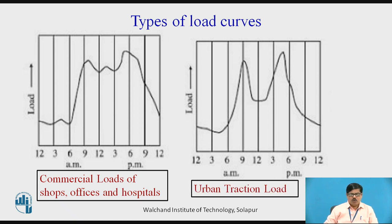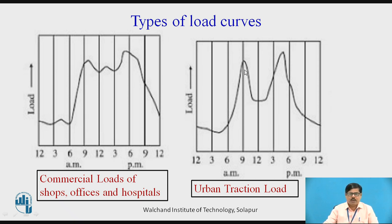The next is urban traction load. Under traction load, it includes the load for tramcars, trolleys, buses, railways, etc. This class of load has wide variations during the morning hour. During the morning hour it reaches the peak value, because people have to go to their workplaces. Similarly, after the morning hour it decreases, reaches a minimum, and again starts increasing during the evening hours because people start coming to their homes after closing of their offices.